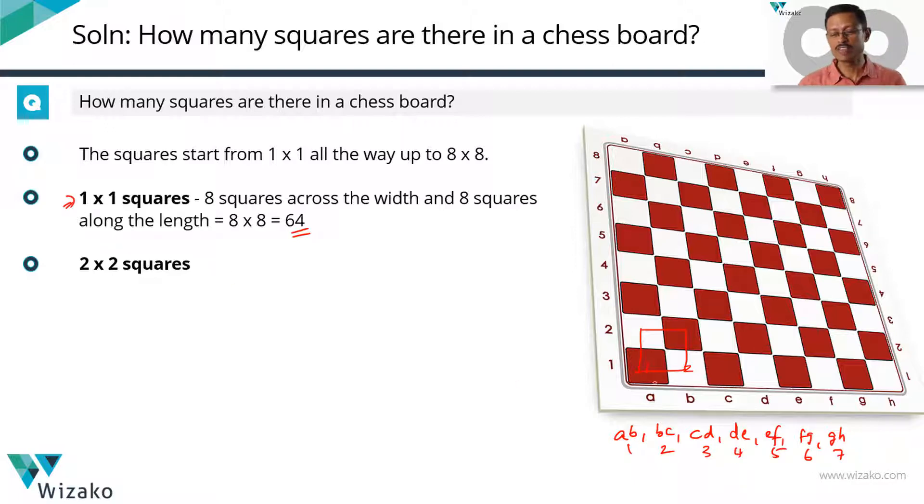When it was a 1 by 1 square, we were able to count 8 of them. When the size of the square increased by 1 unit, when it became 2 by 2, the degree of freedom reduced by 1. So now how many do we have across the width? We have only 7. The same is going to happen along the length also. We'll quickly do that. It could be 1,2 or 2,3 or 3,4 or 4,5 or 5,6 or 6,7 or 7,8. So how many are there? 1, 2, 3, 4, 5, 6, 7. So we have across the width, we can move 7 ways. Along the length, we can move 7 ways. So how many 2 by 2 squares are there? We have 7 into 7 which is equal to 49 such 2 by 2 squares.